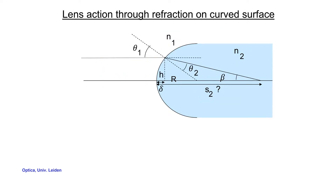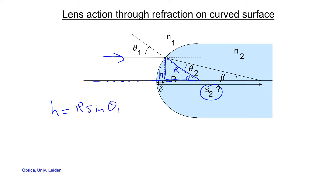Consider one specific ray hitting the surface at distance h away from the optical axis. In this figure, I've added angles and other expressions to help calculate distance S2. Using geometric arguments, one relation we can derive is h = r times sine theta_1, where theta_1 is the angle in this triangle.